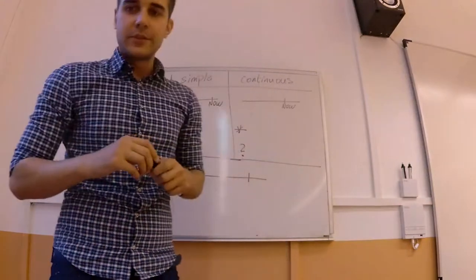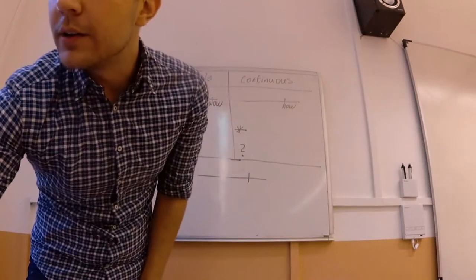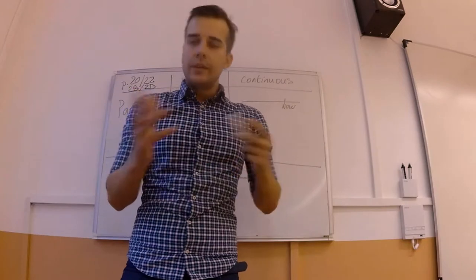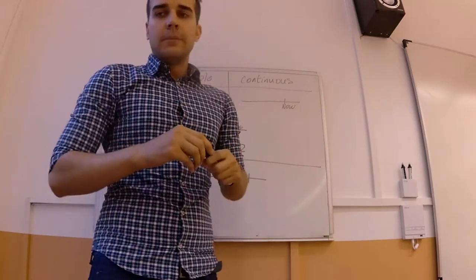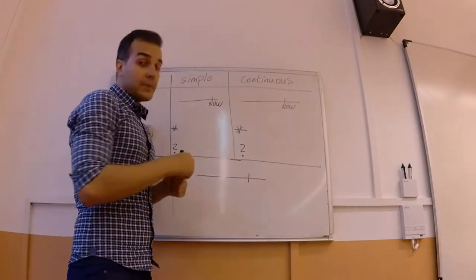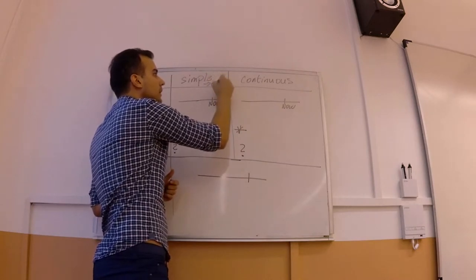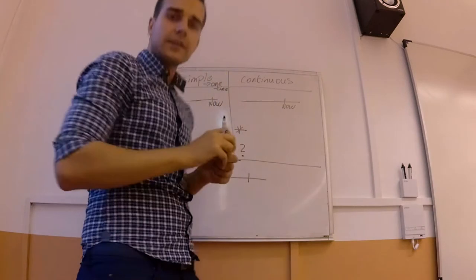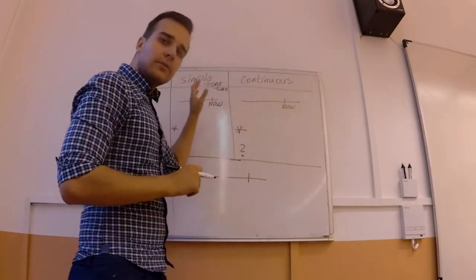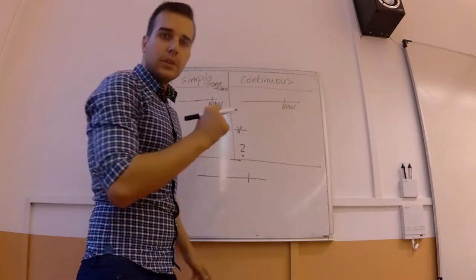Alright everyone, so today we will discuss pages 20 and 22. It is in your book and over there we have 2B and 2D. Over here we will expand on past simple because last time, in the first unit, we discussed past simple as a one-time action. Today we will discuss further how we can use the past tense, continuing with the continuous way.